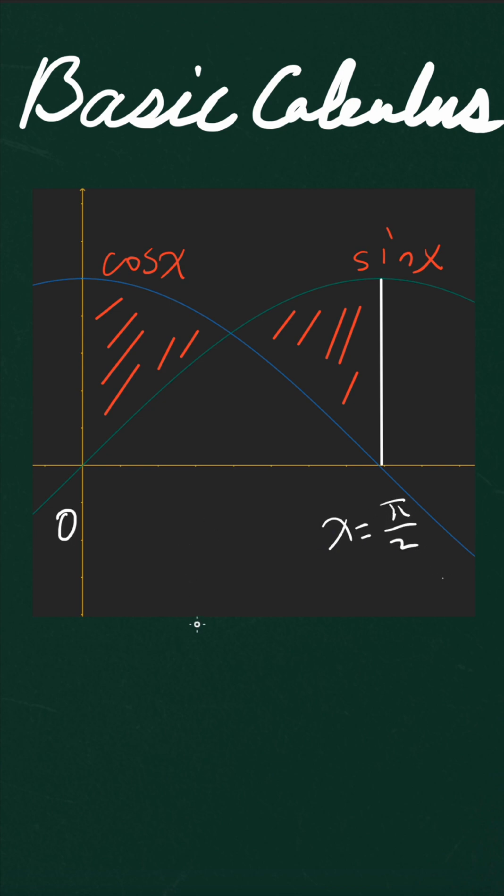The question becomes the integral of the difference of the two functions, right? But today the problem is a little different because for this area over here, cosine x is bigger than sine x. And then for this area, sine x is bigger than cosine x.